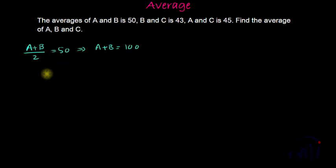B and C is 43. So the average of B and C, that means B plus C by 2 is 43, or you can say B plus C is 43 multiplied by 2, that is 86.